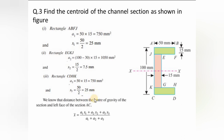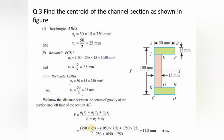x̄ = (A1×x1 + A2×x2 + A3×x3) / (A1 + A2 + A3) = (750×25 + 1050×7.5 + 750×25) / (750 + 1050 + 750) = 17.8 mm. That is the centroid of the C-section from the vertical reference axis.